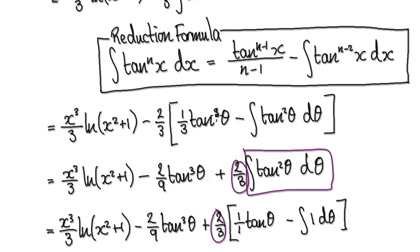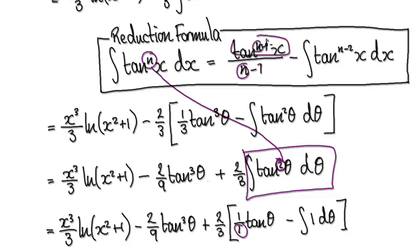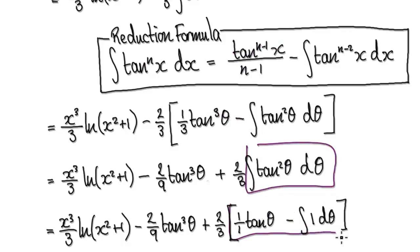Going back to the reduction formula for tan squared, where n=2: n minus 1 is 1, so we get tan to the power of 1 (which is just tan theta), and n minus 2 is 0, so anything to the power of 0 is 1. Applying the reduction formula on tan squared gives us this result.